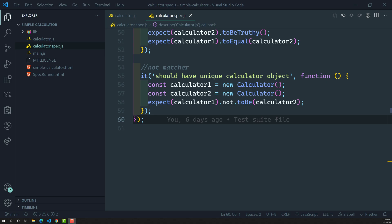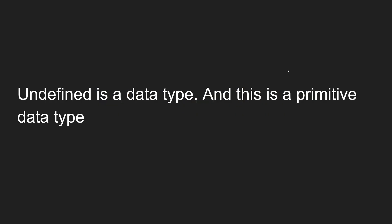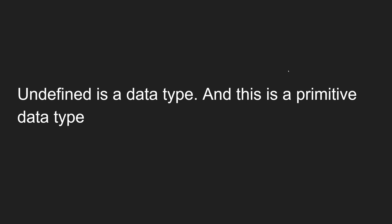Before knowing about these matchers, we need to know what undefined is. Undefined is a data type in JavaScript — one of the primitive data types. JavaScript data types come under two categories: primitive data type and non-primitive data type, and undefined falls under the primitive category.